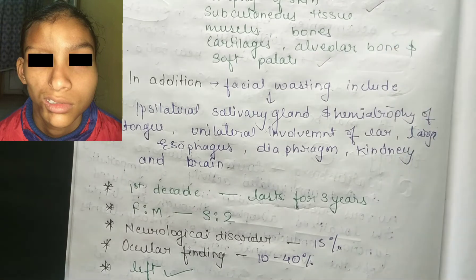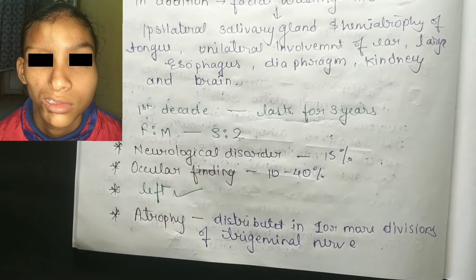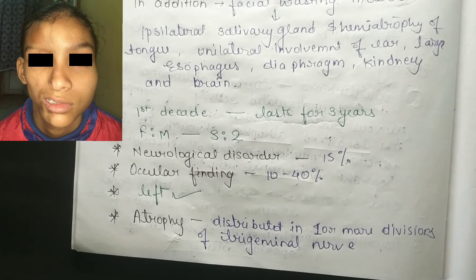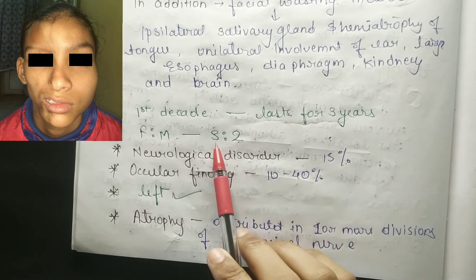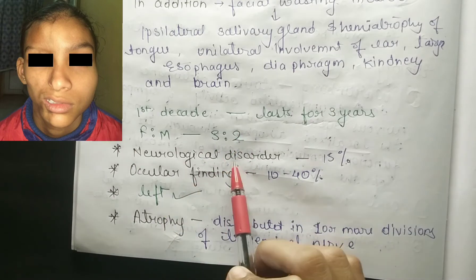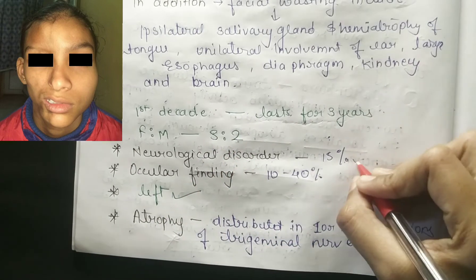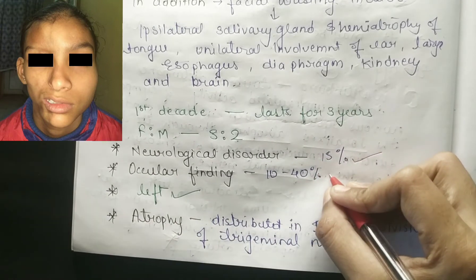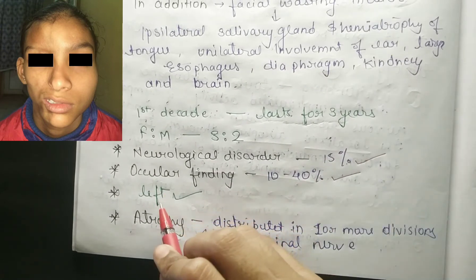This disease can extend significantly and affect many body systems. It typically begins in the first decade of life, affecting children more commonly, and lasts up to three years. There is no treatment for this disease. The female-to-male ratio is 3:2, meaning females are more commonly affected. Neurological disorders are present in 15% of cases.